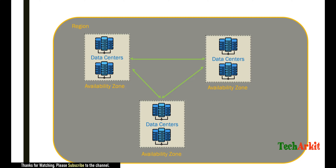At a minimum, each region has at least two availability zones, and each availability zone contains at least two data centers. Within each data center there are multiple servers with high availability enabled, so you won't lose any data or accessibility. AWS provides a data durability guarantee of 99.999999999% (11 nines) and service availability of 99.99%, ensuring the service is always up and running.